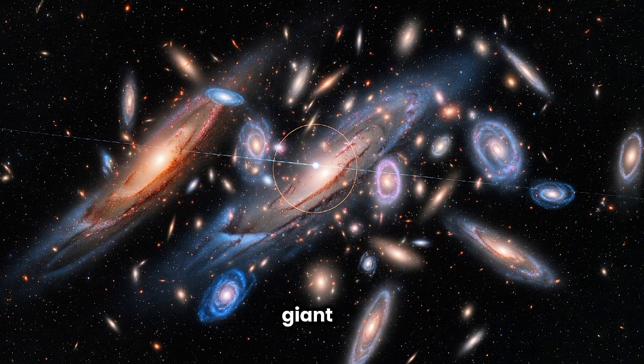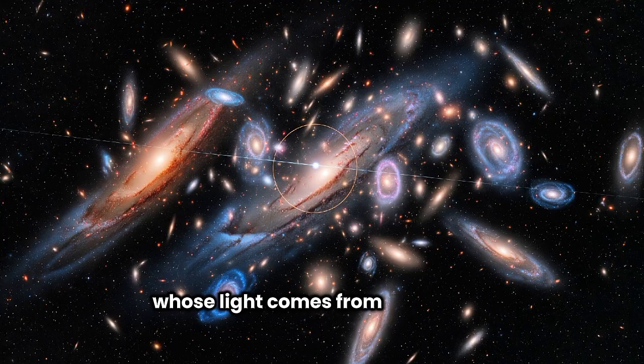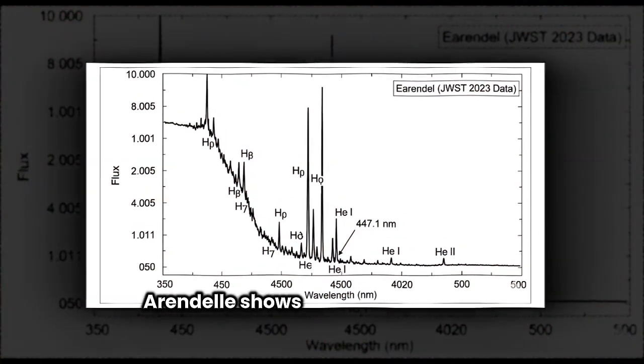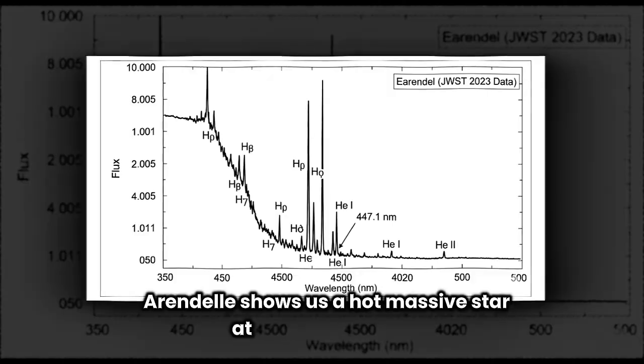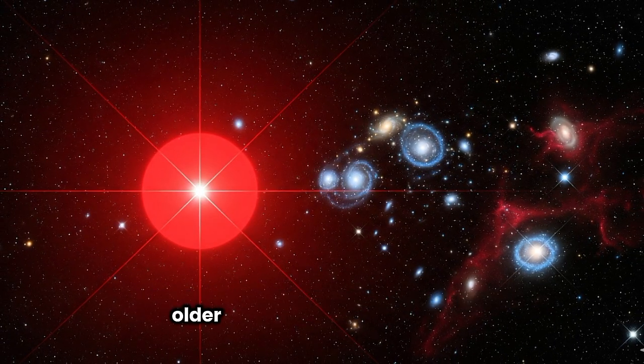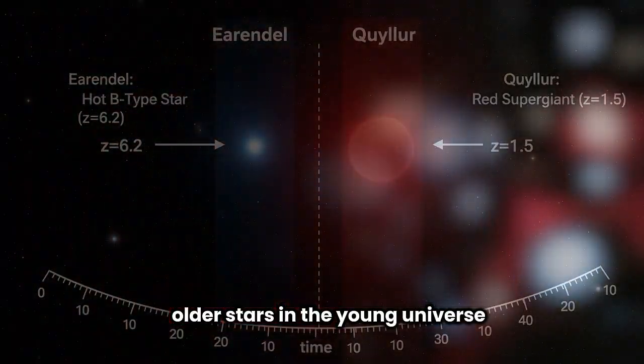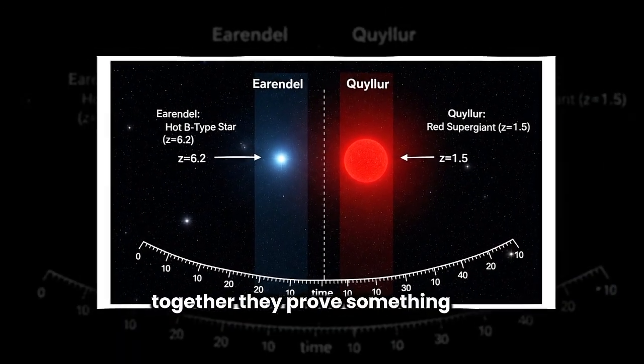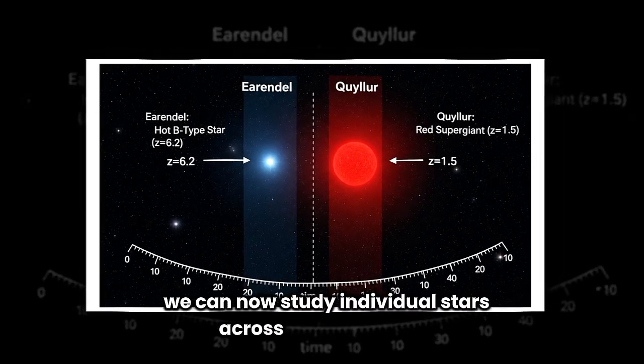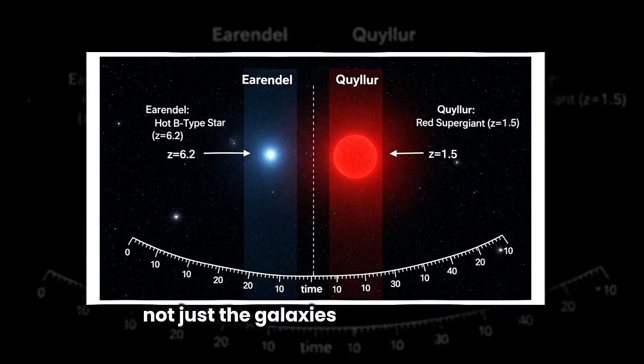One of them is Quilla, a red giant star whose light comes from just three billion years after the Big Bang. Earendel shows us a hot, massive star at extreme distance. Quilla shows that Webb can also catch cooler, older stars in the young universe. Together, they prove something once thought impossible. We can now study individual stars across billions of years, not just the galaxies that contain them.